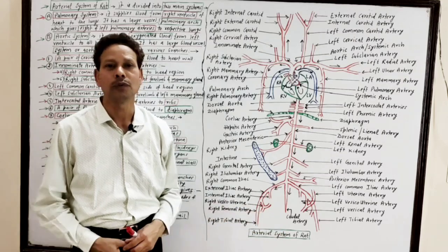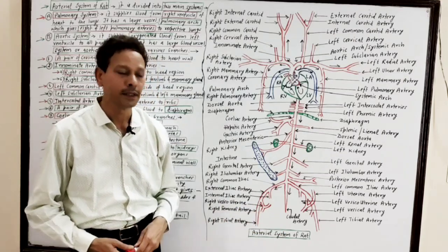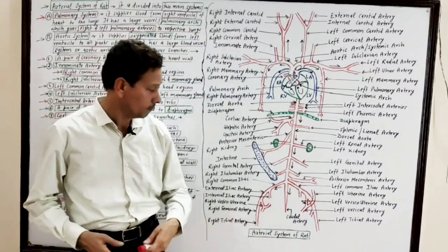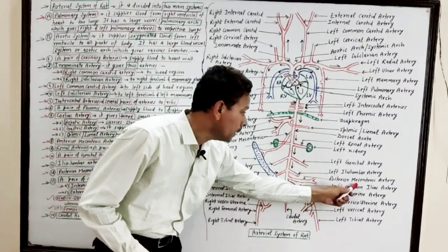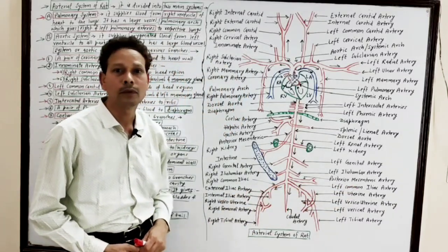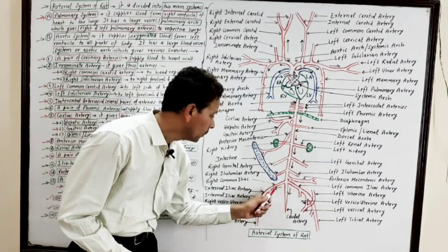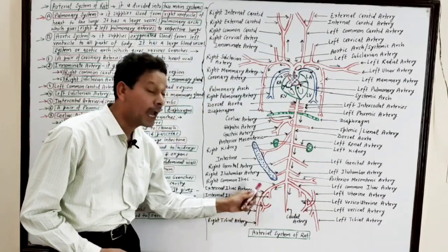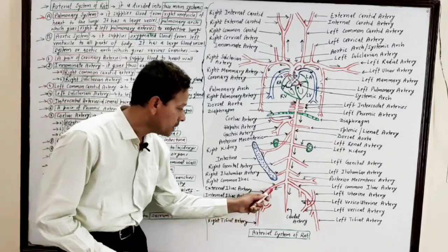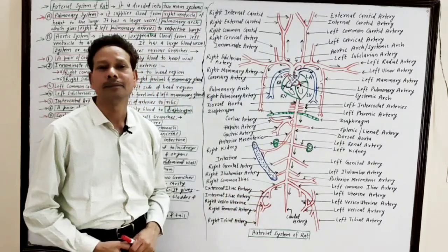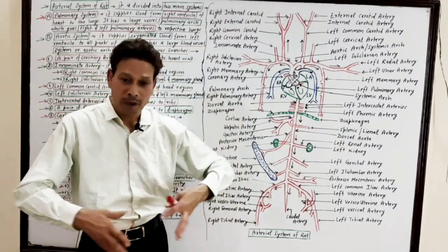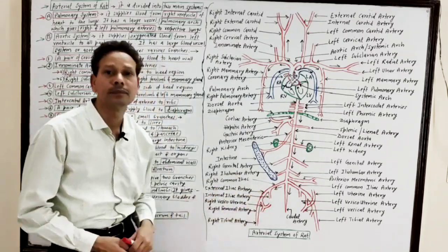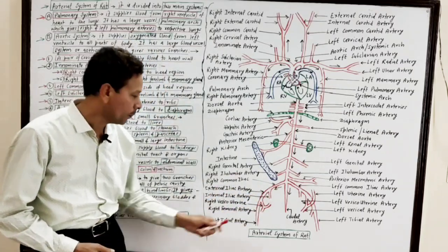The common iliac artery carries blood to the pelvic region and further divides into the internal iliac artery, which carries blood to the pelvic region, and the external iliac artery, which further divides into branches supplying the uterus and lower limbs.